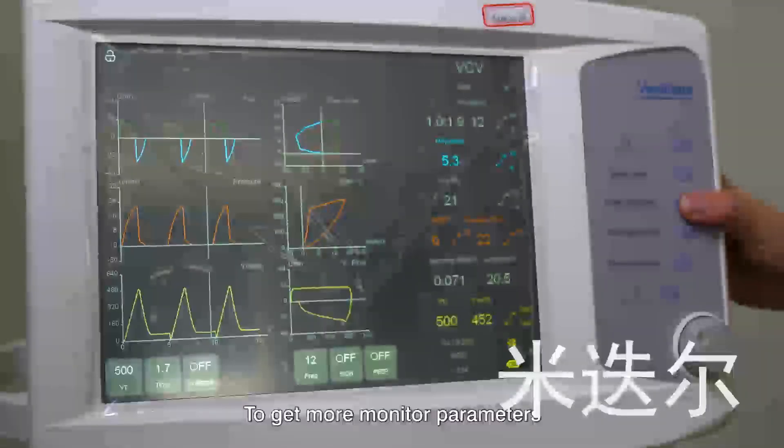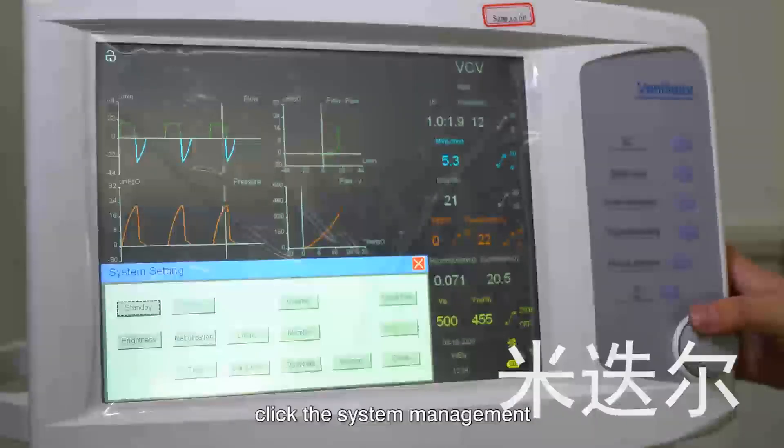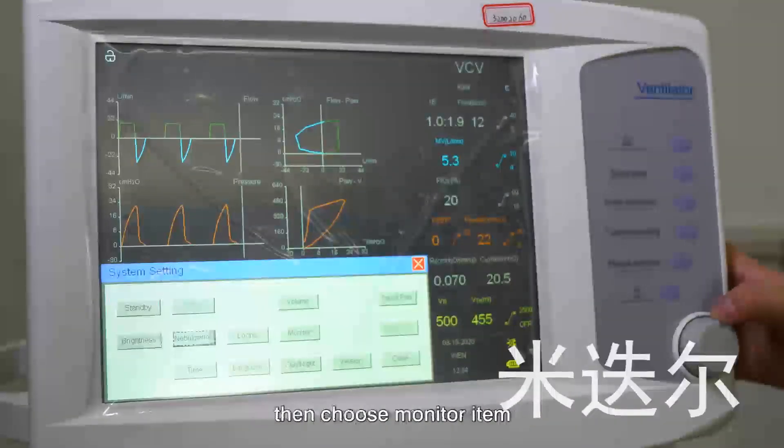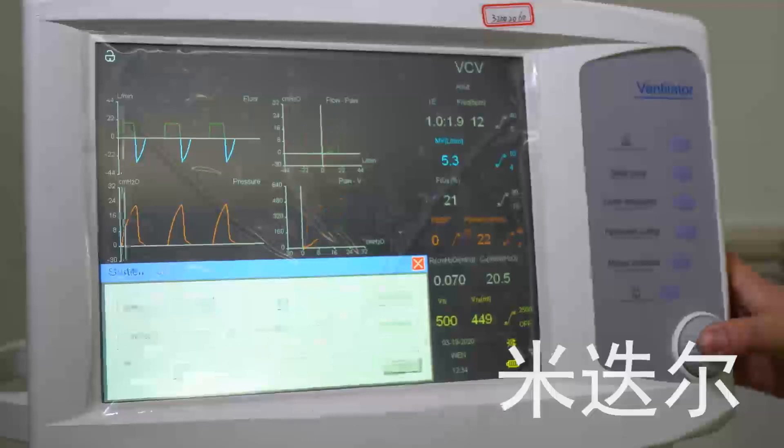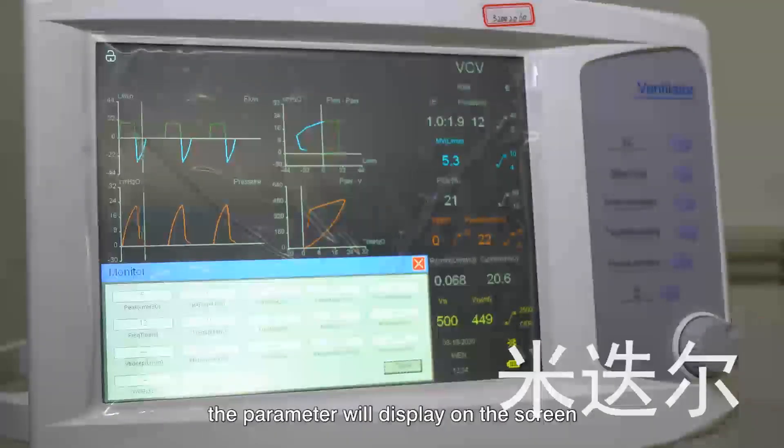To get more monitor parameters, click the system management, then choose the monitor. The parameters will display on the screen.